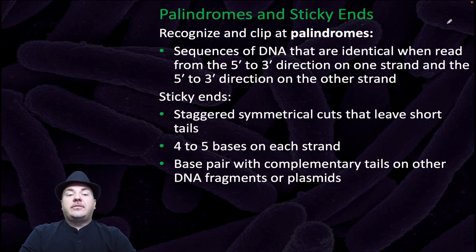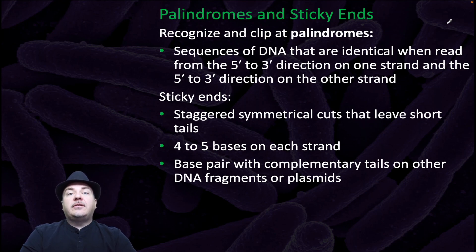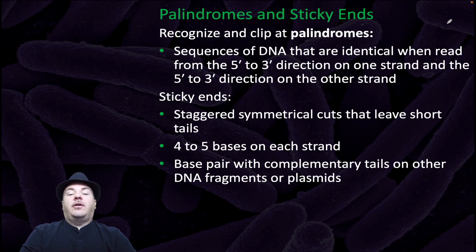The endonucleases recognize and clip palindromes, which are sequences of DNA that are identical when read from the five prime to three prime direction on one strand, and the five prime to three prime direction on the other strand. The endonucleases often leave sticky ends, which are staggered, symmetrical cuts — at least short tails, four to five bases along in each strand. These will base pair with complementary tails and other DNA fragments or plasmids.